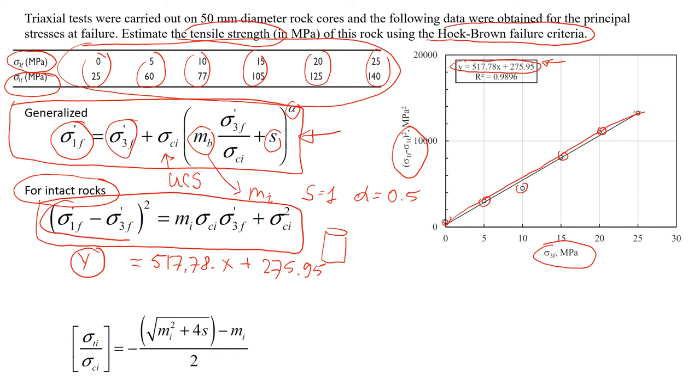So now we're going to see that y is actually this component in the equation, right? Because that's what it says here. And then x, it's sigma 3f. So it's this one. So now we will see that this component, the one that we add, which is 275.95, is going to be unconfined compressive strength in the power of 2. And this is what we can write right now.